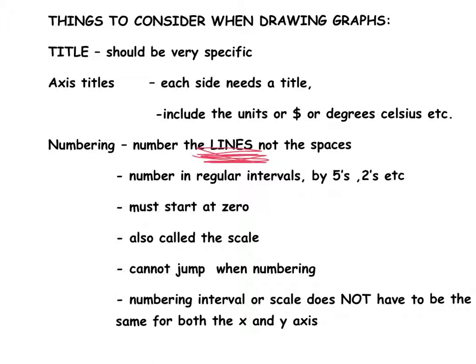We also have to number in regular intervals. So we have to number by 5s, by 2s, by 10s, and so on. It can't start at 0, then go to 1, then go to 3, 6, and so on. When we think, oh, I'm counting by 3s. Well, actually, I'm not counting by 3s because 0 to 1 is 1, 1 to 3 is 2, 3 to 6 is 3, 6 to 9 is 3. But I haven't counted by 3s the whole way through.